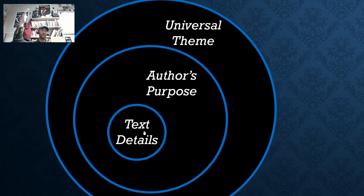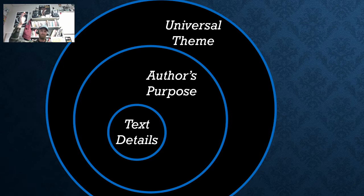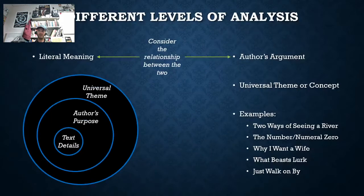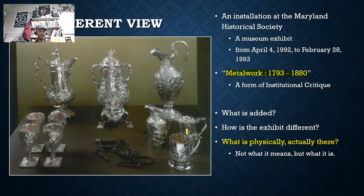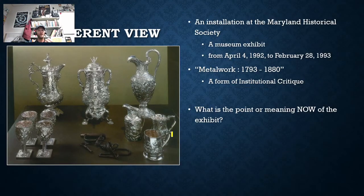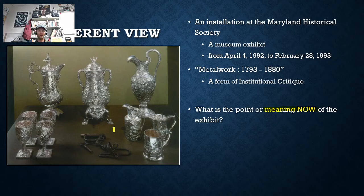We have these different levels of how we are analyzing and interpreting the text. We have these text details — what's literally there — and there's the author's purpose and the bigger, broader, universal theme that it connects to and relates to. Here's what's literally actually there. The next question is: what does it mean now? We have this change, we have this contrast, we have this new item added.